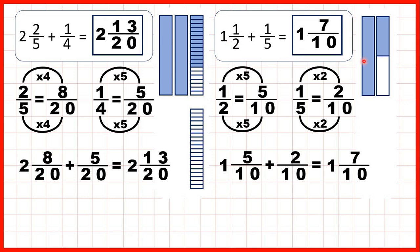Then we had 1 and a half, and we were adding 1 fifth. We changed the half into 5 tenths, and the fifth into 2 tenths, and because they both had the same denominator we could add them together, and that gave us our answer 1 and 7 tenths.